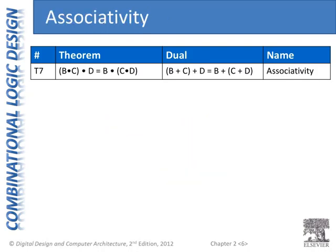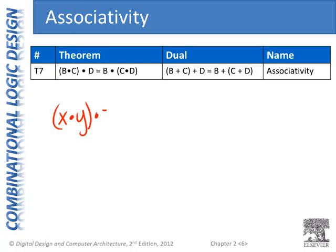Associativity is also the same as what we've seen in regular algebra. We can associate different terms and the evaluation of the expression is the same. So B AND C, if we evaluate that first and then AND that result with D, that's the same as evaluating C AND D first and then ANDing that result with B. This is the same as regular algebra: X times Y times Z, grouped any way, yields the same result.